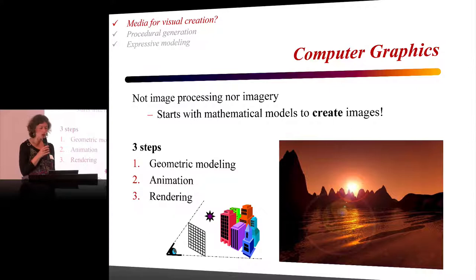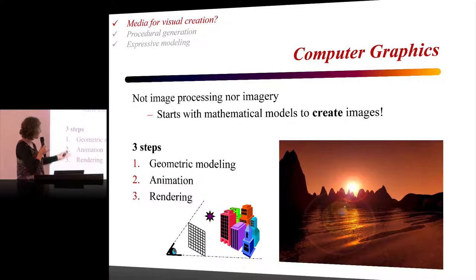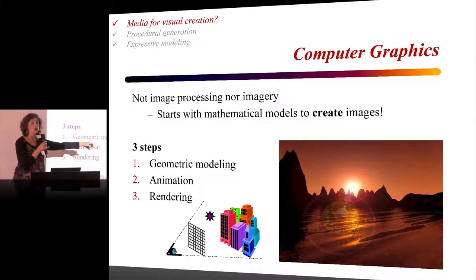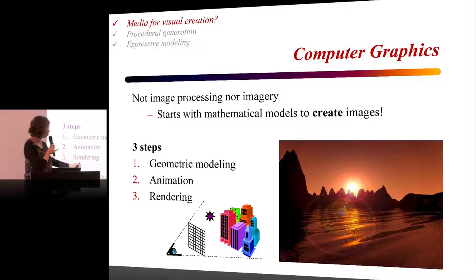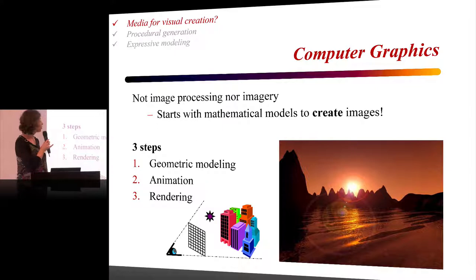To create this image, we use three steps. The first is geometric modeling — we model the 3D geometry using mathematical representations. Then we animate this geometry; for instance, here there is a virtual sea and we animate the waves. Then rendering is the fact that we compute what a camera or eye would see — what we should put in each pixel of an image if we simulate this virtual scene with lights and materials.